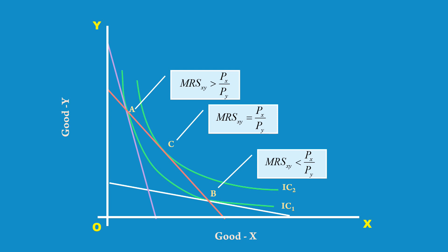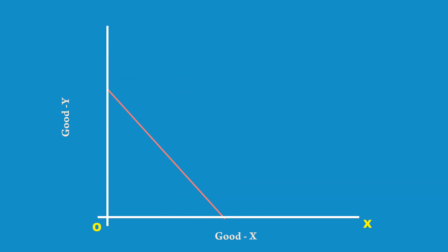I sincerely feel I must do proper justice to their demand. I shall start like this. Let us take the price line and try to understand what is PX by PY. The consumer's income is 100 rupees, price of good X is 20 rupees, and price of good Y is 5 rupees. If the consumer spends his entire income on good X, he can buy 5 units. On the other hand, if he spends his entire income on good Y, he can buy 20 units of Y.